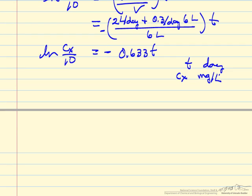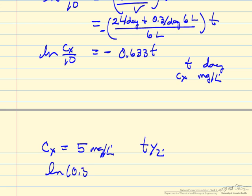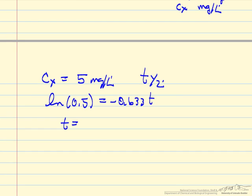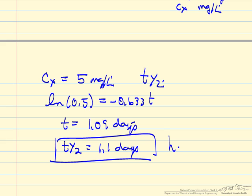For half-life, when concentration is 5 mg/L, we have 5 over 10, so log(0.5) equals the expression, giving T equals 1.09 days. With significant figures, the half-life is 1.1 days, the time to get to half the concentration.